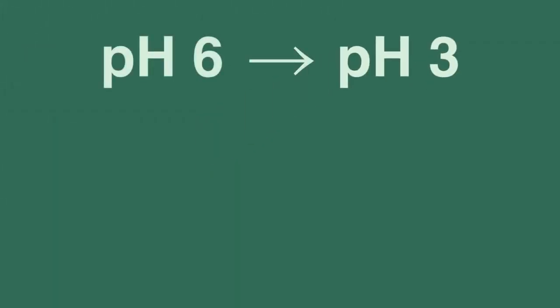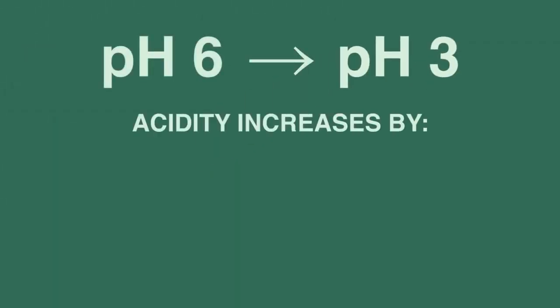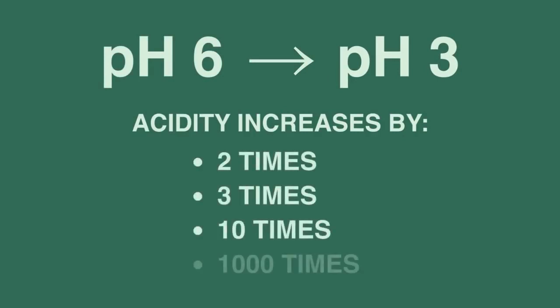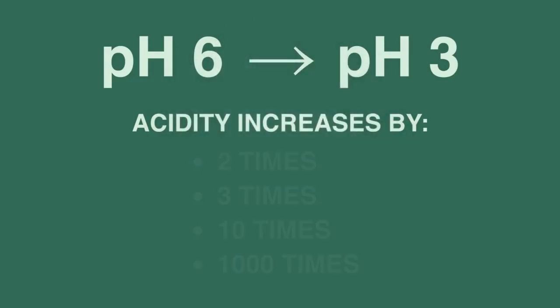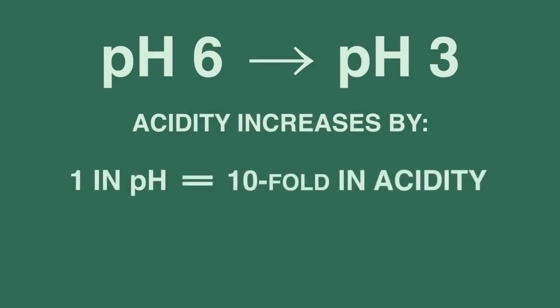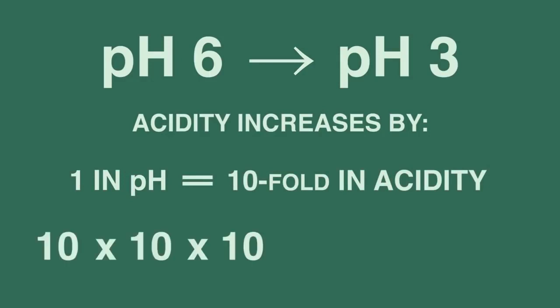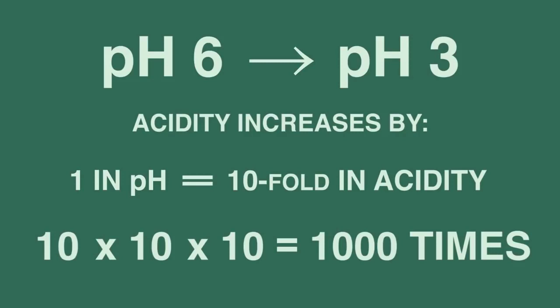When the pH changes from 6 to 3, what do you think the acidity increases by? Two times? Three times? Ten times? A thousand times? Pause and think. Remember that each change of one in pH is a tenfold change in acidity, so changing from 6 to 3 is 10 times 10 times 10, or a thousand times more acidic.